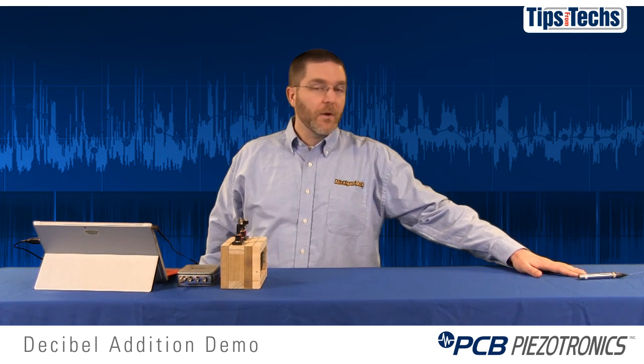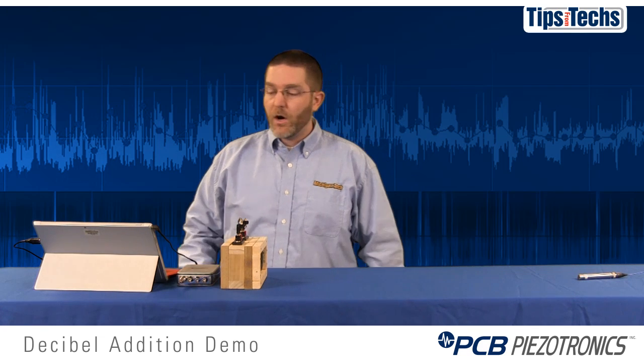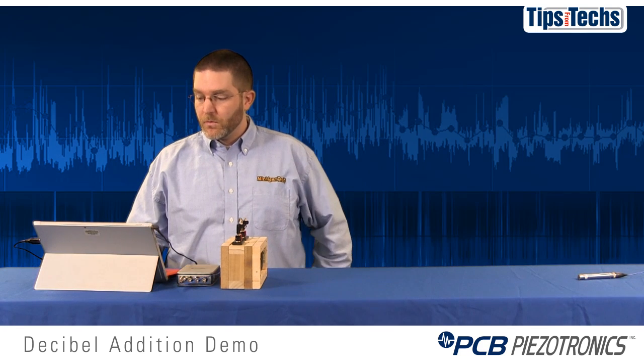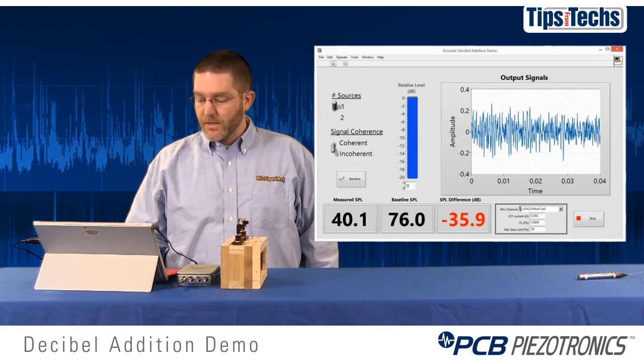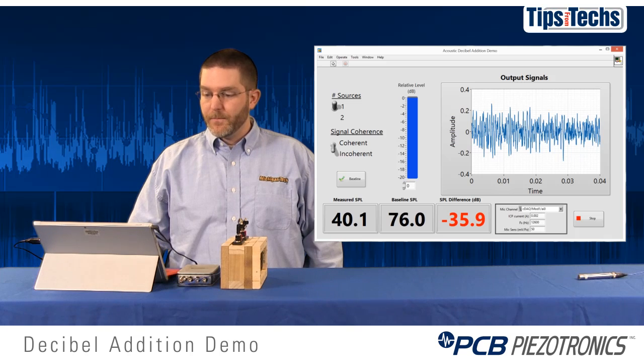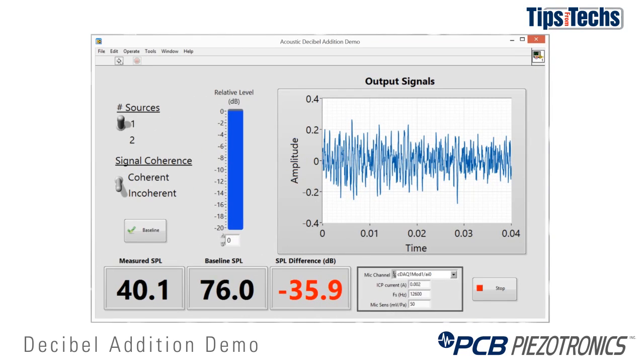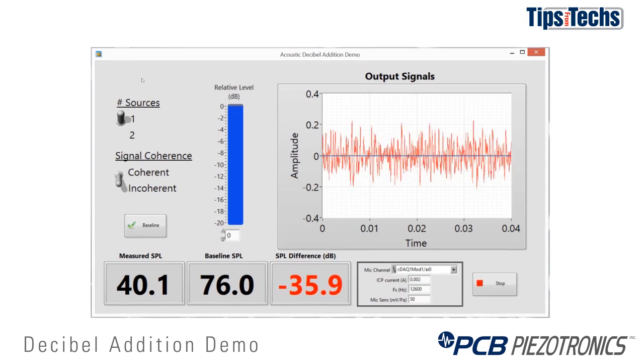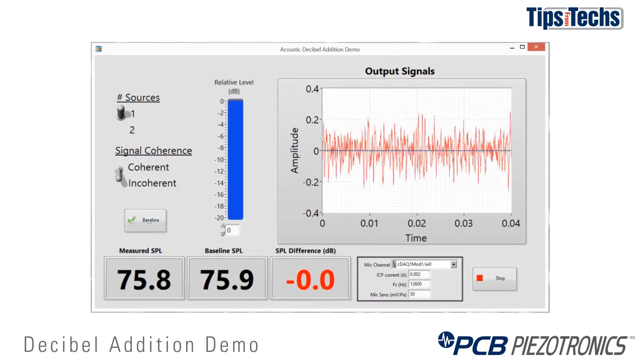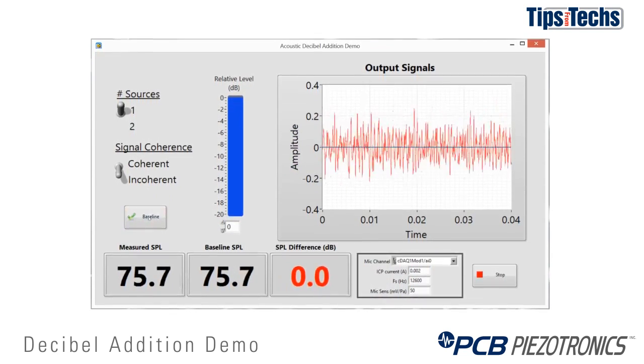You'll notice for this demonstration, we have the microphone sitting on the table and not off the stand. So we'll start the white noise and take a baseline level with a single speaker. Our baseline level is 75.7 dB.